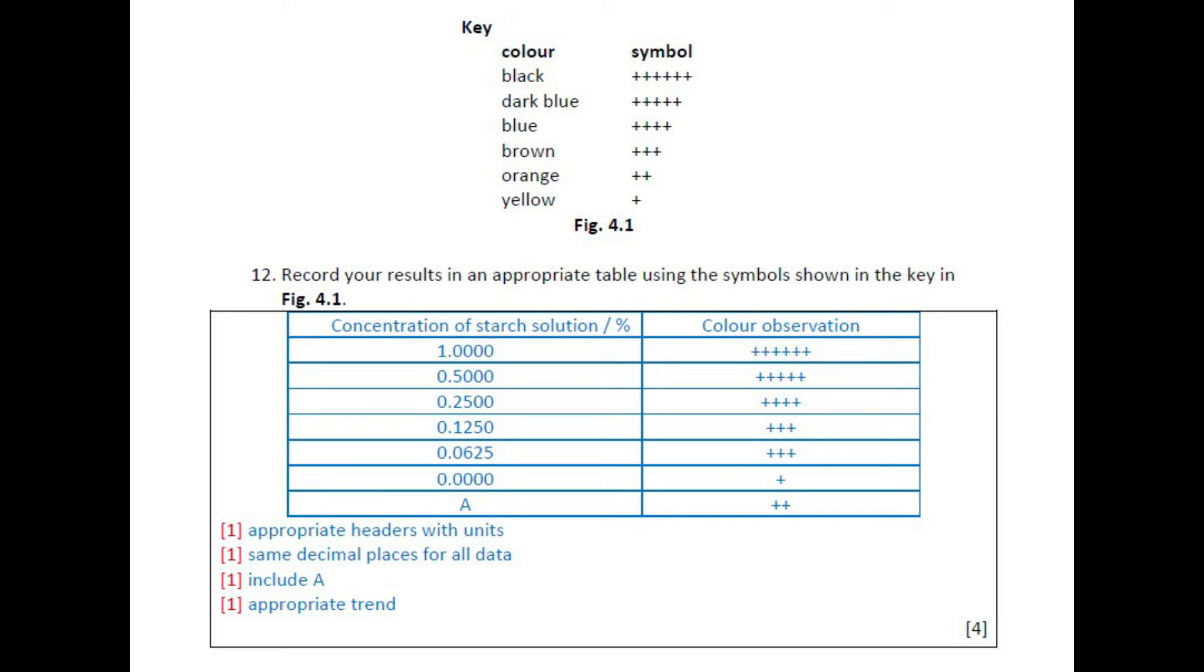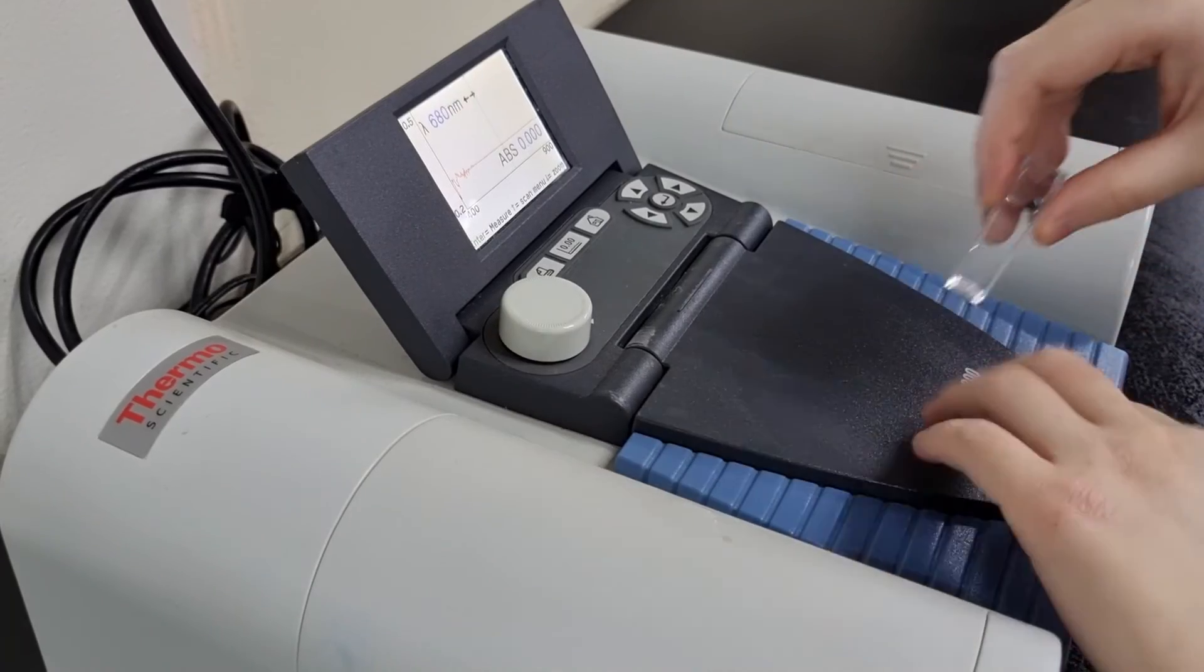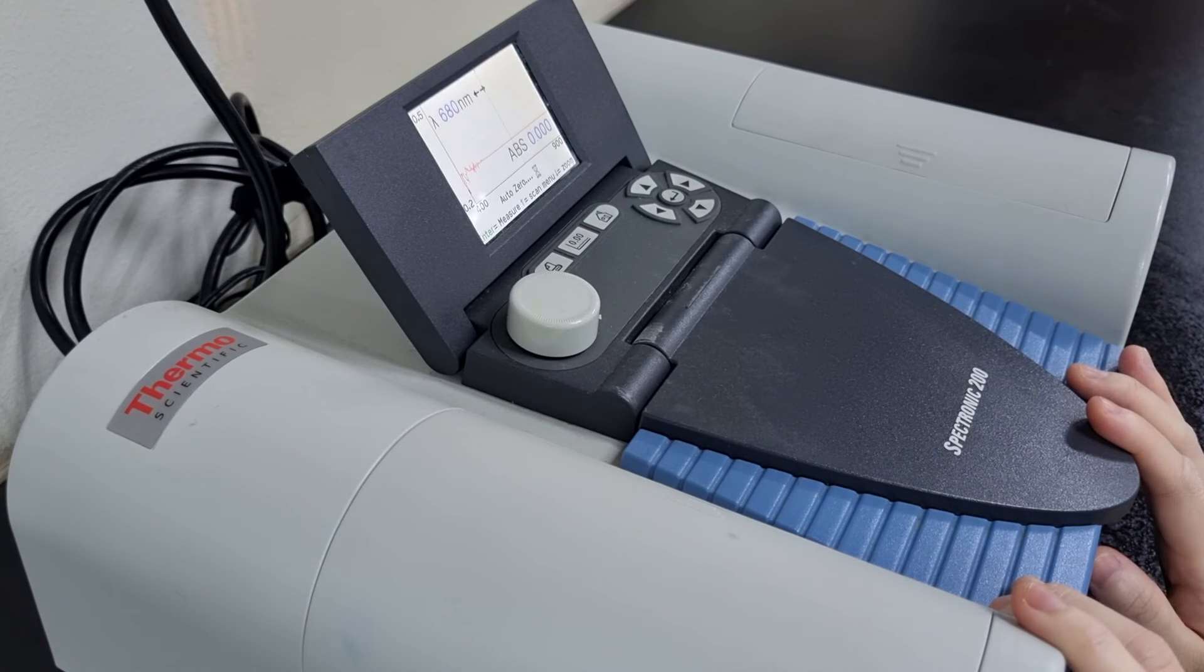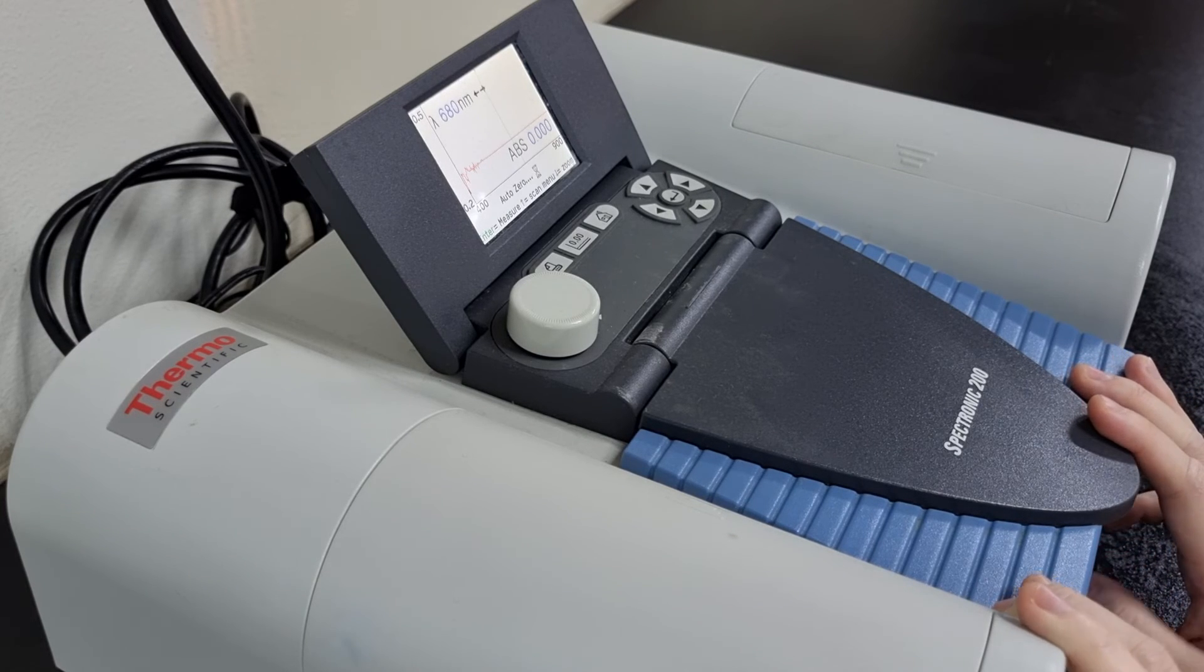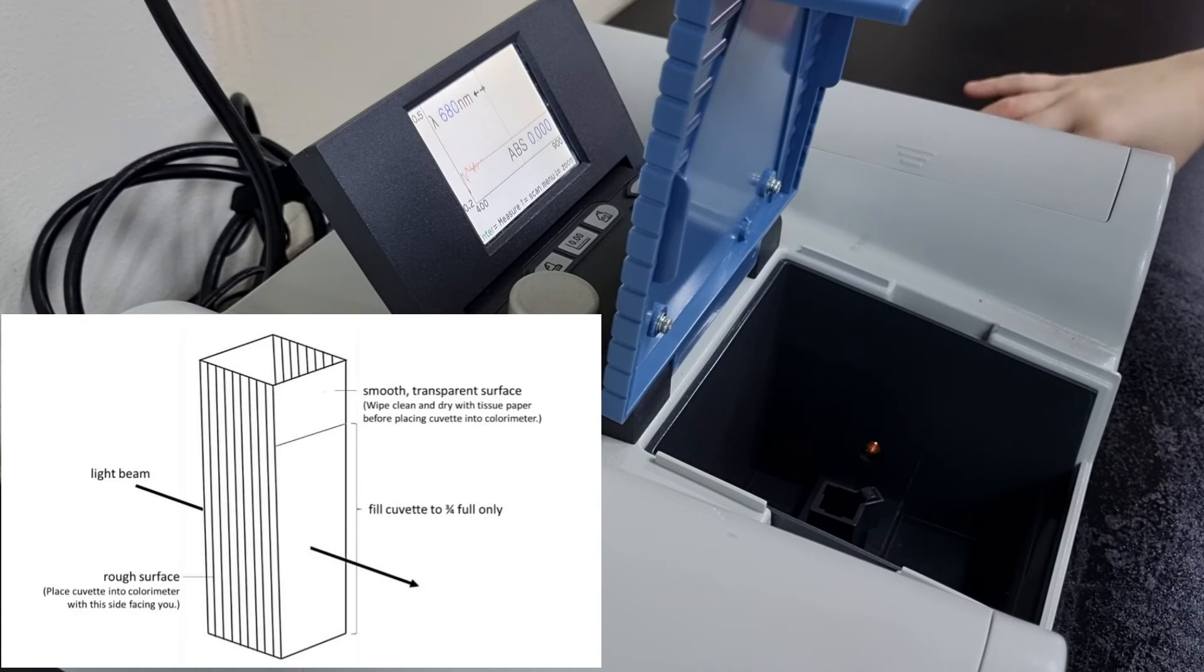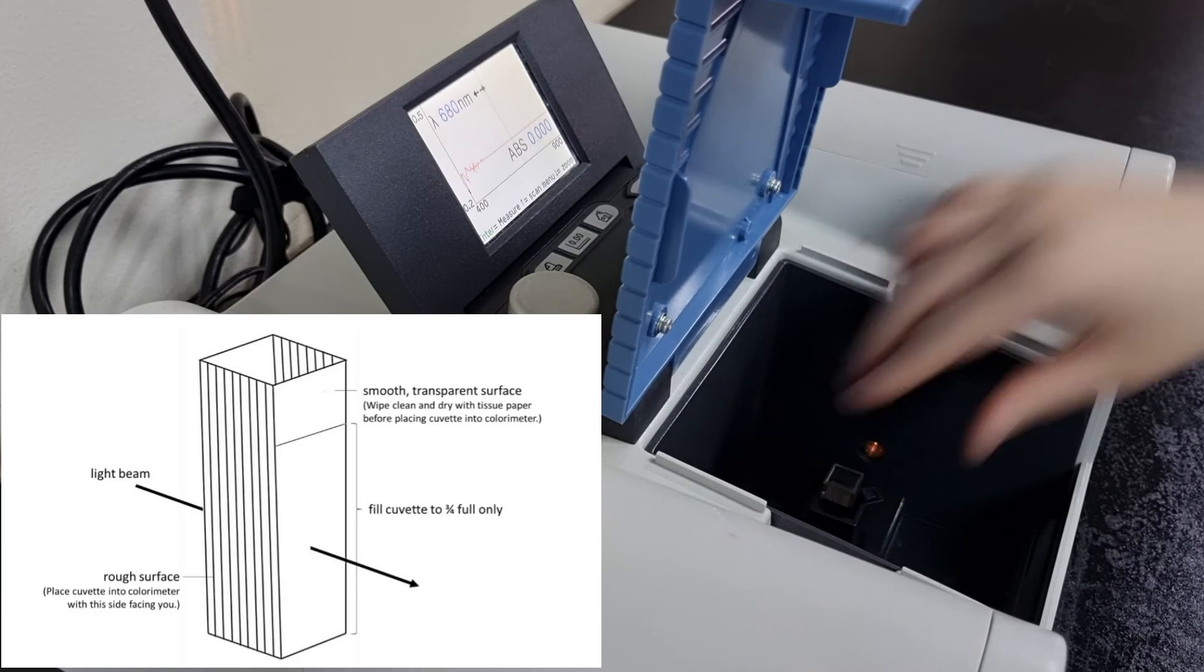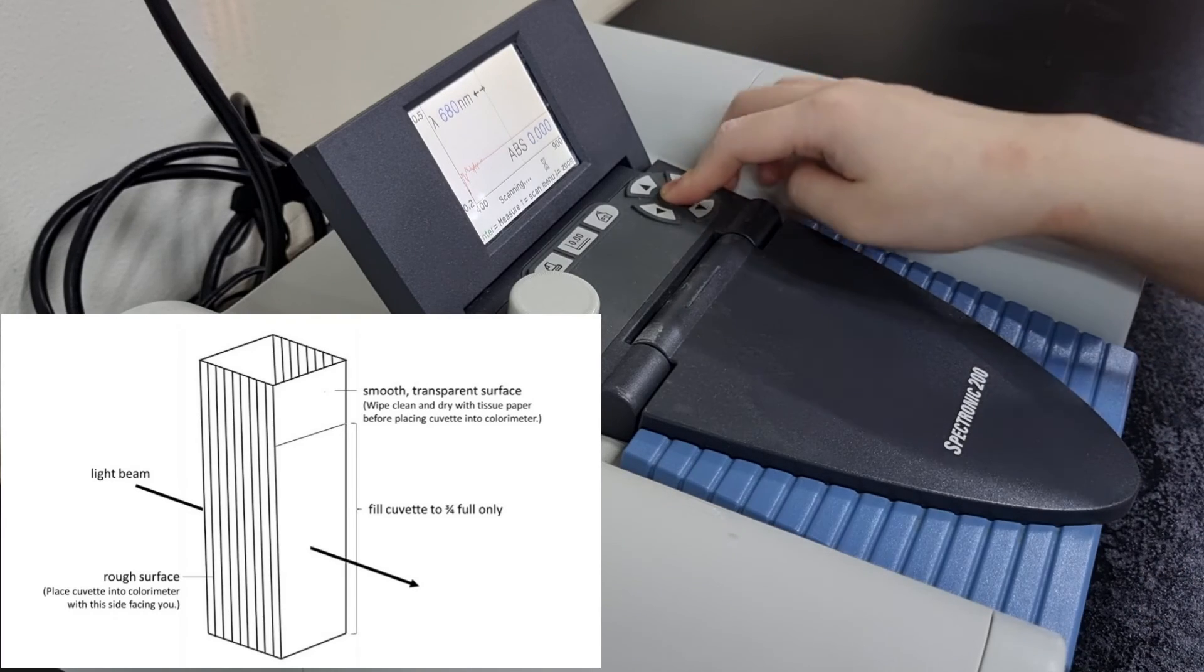Now moving on to our quantitative test. While using the spectrophotometer, it's important to first zero the machine with a blank cuvette. This is just a cuvette with distilled water without iodine. After that, we can then put in the cuvette with our solutions in order to measure the absorbance. The machine shines a light beam through the smooth areas of the cuvette, so the rough surface should be facing you. And then you can press enter, and the absorbance reading will be shown on the screen.